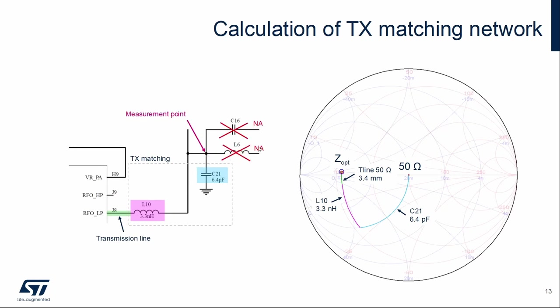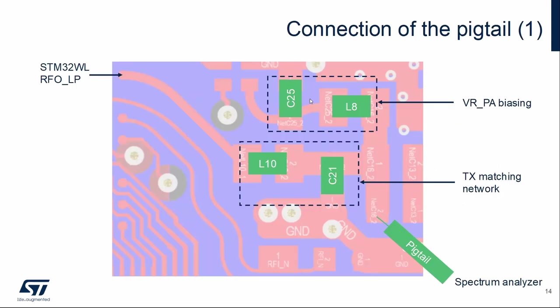The remaining components C16 and L6 are not fitted on the board. Here we can see the layout with power amplifier biasing, transmitter matching network and place where the pigtail is connected. It is connected to a spectrum analyzer through an RF cable.